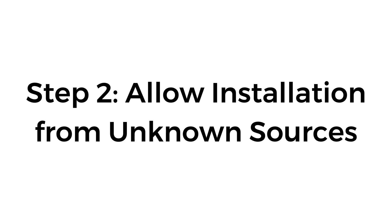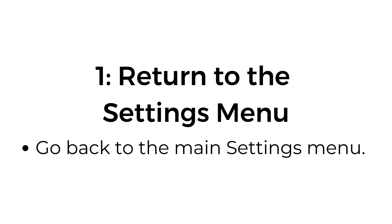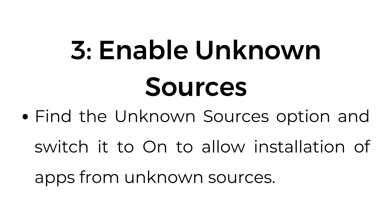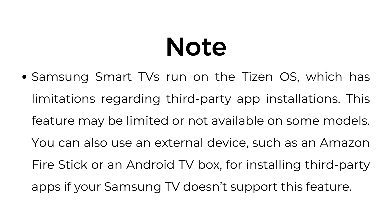Step number two: allow installation from unknown sources. Return to the main settings menu. Select personal or security settings — depending on your Samsung TV model, go to Personal, Security, or Device Preferences and Security and Restrictions. Find the unknown sources option and switch it to on to allow installation of apps from unknown sources.